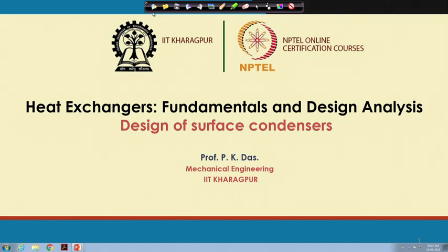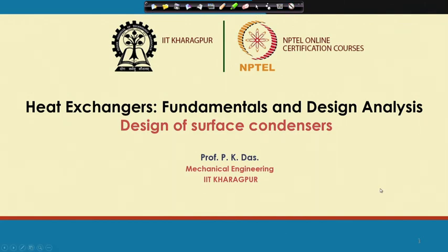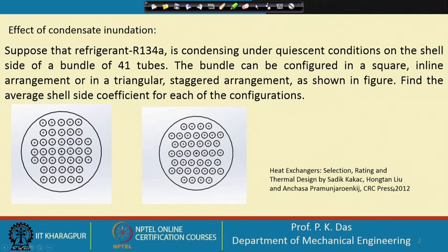We will slowly go to surface condensers. We have done one problem where we took a single tube with condensation of refrigerant vapour over it. Now we are taking up another problem from the book 'Heat Exchangers: Selection, Rating and Thermal Design' by Kakaç and co-authors. Suppose that refrigerant R-134A is condensing under quiescent conditions — that is, almost stationary vapour — on the shell side of a bundle of 41 tubes. The bundle can be configured in a square inline arrangement or in a triangular staggered arrangement. Find the average shell-side heat transfer coefficient for each configuration.